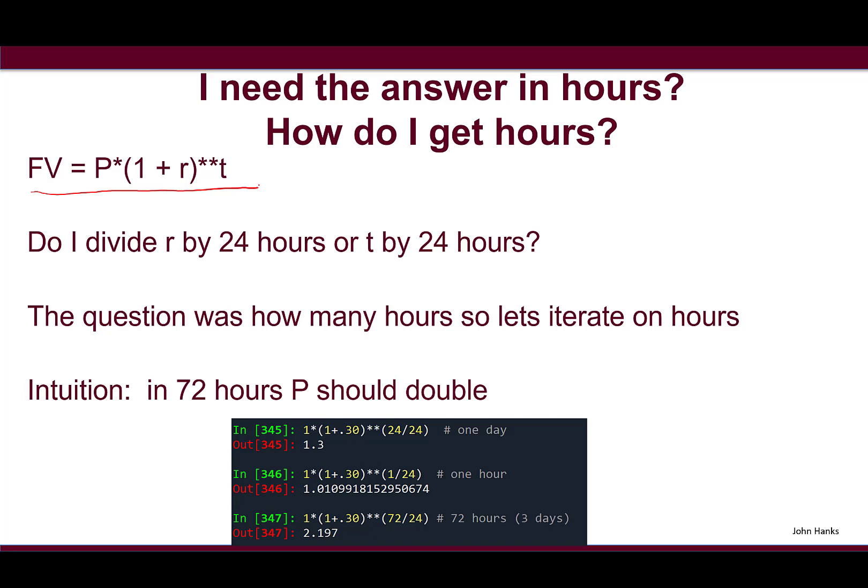Here's our general formula FV = P*(1 + r)**(t/24). T is the compound time rate - the duration. I gave it to you in days, so we went from 1 to 1.3 in one day. If I divided t by 24, that would give me an hourly rate for the infection rate growth.